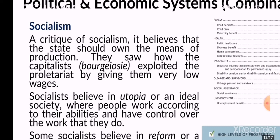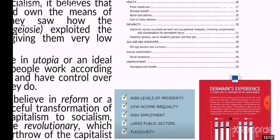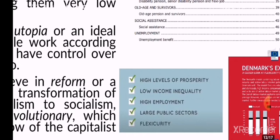In socialist countries, a lot of investment goes to education, because the only way to maintain such a society is with an educated workforce. Denmark is a good example — it's a combination of socialist and capitalist, what we call a welfare state. Their policy aims to decrease inequality. They have high levels of prosperity, low income inequality, high employment, and large public sectors. Almost 30% of employment in Denmark is from the government, which is very common for socialist or welfare states.